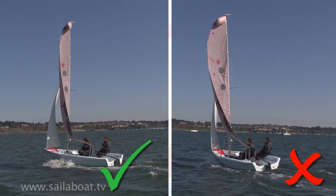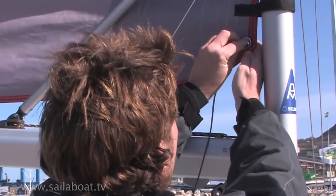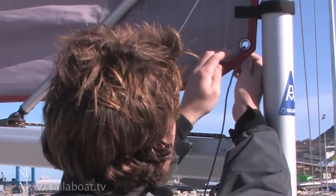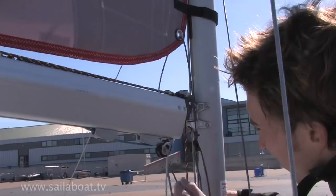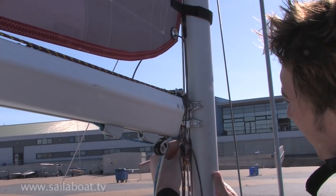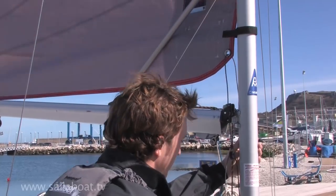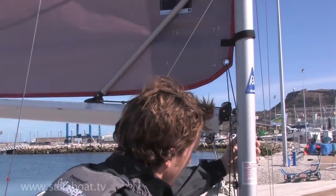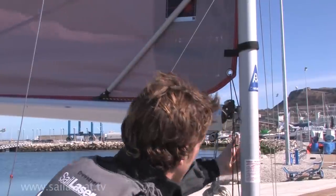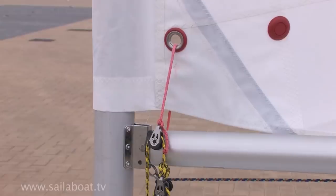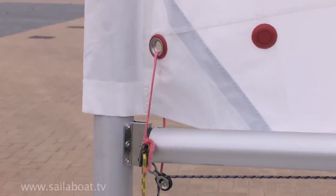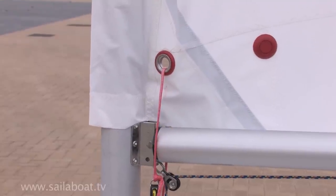Another sail control is the Cunningham or downhaul. This is a small piece of rope that loops through a reinforced hole about 4 inches above the boom at the mast end and ties back to the boom. And when tensioned, it creates a fold in the sail cloth just above the boom behind the mast. At this stage in your development, all you need to know is that the stronger the wind is, the more you pull it.